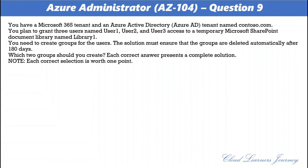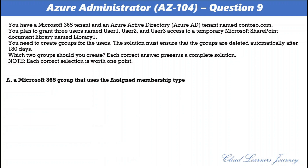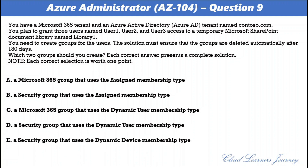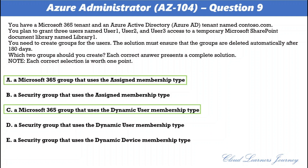Question number nine. You have a Microsoft 365 tenant and an Azure Active Directory tenant named contoso.com. You plan to grant three users — user1, user2, and user3 — access to a temporary Microsoft SharePoint document library named library1. You need to create groups for the users, and the solution must ensure the groups are deleted automatically after 180 days. The correct options are: A) Microsoft 365 group that uses the assigned membership type, and C) Microsoft 365 group that uses the dynamic user membership type. You can set expiration policy only for Office 365 groups in Azure Active Directory.